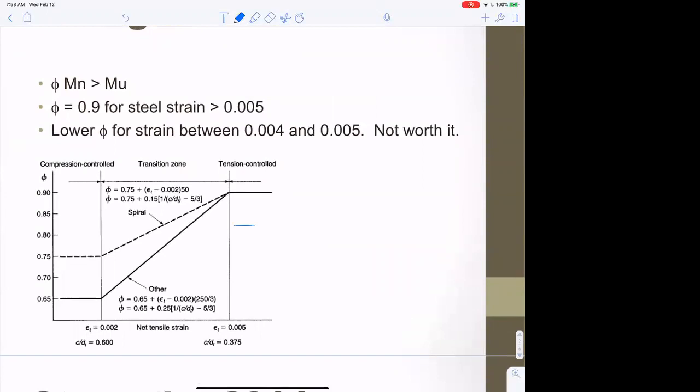Out this way we have beams, and out this way we have columns. Beams are governed by moment, and columns are governed by axial load. Beams are more reliable because they're governed by the steel in tension if detailed properly, so this phi factor was 0.9.